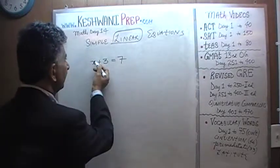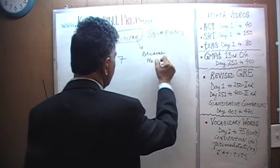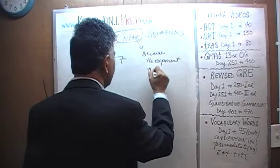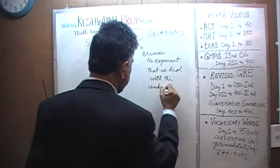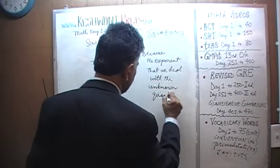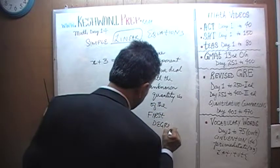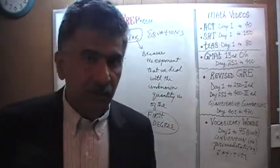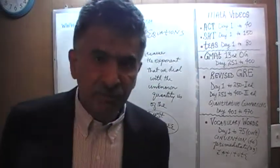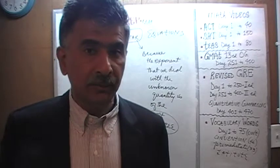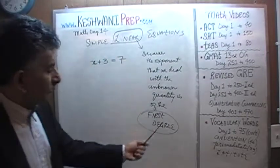It is called a linear equation because the exponents we deal with are of the first degree — that is how we say it. The unknown quantity is of the first degree. This is how your algebra book and your algebra teacher will express the notion. They express it this way because that is the nerdy, geeky, classical, traditional, academic way.